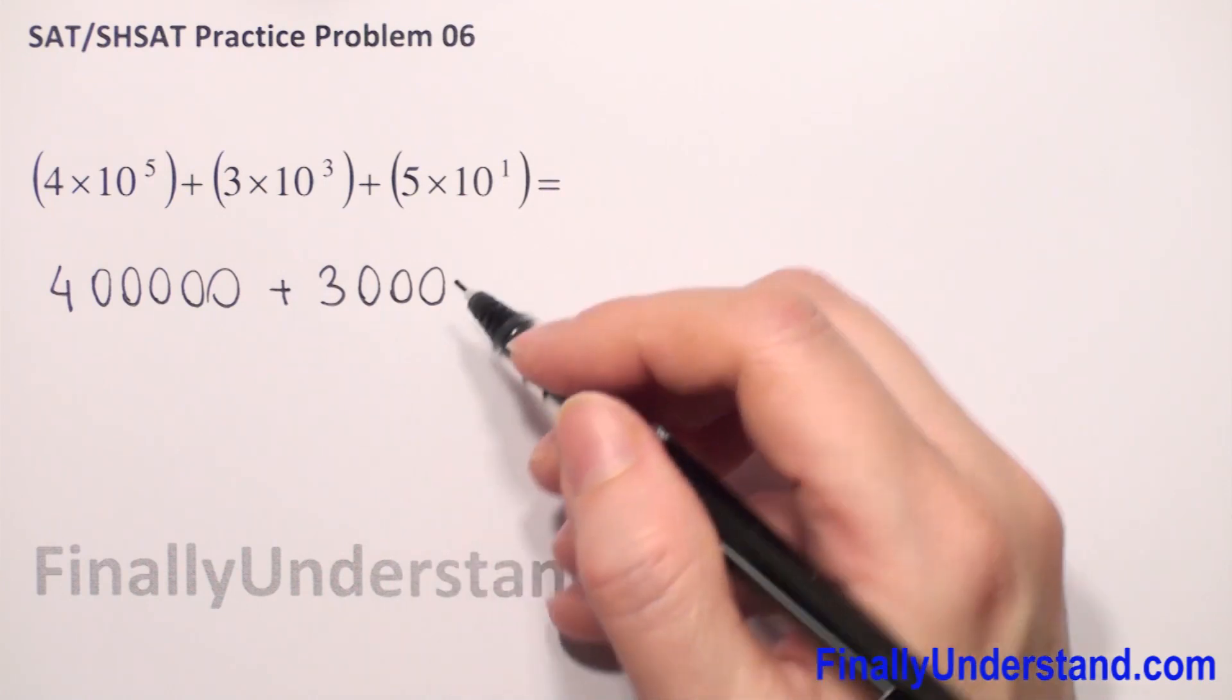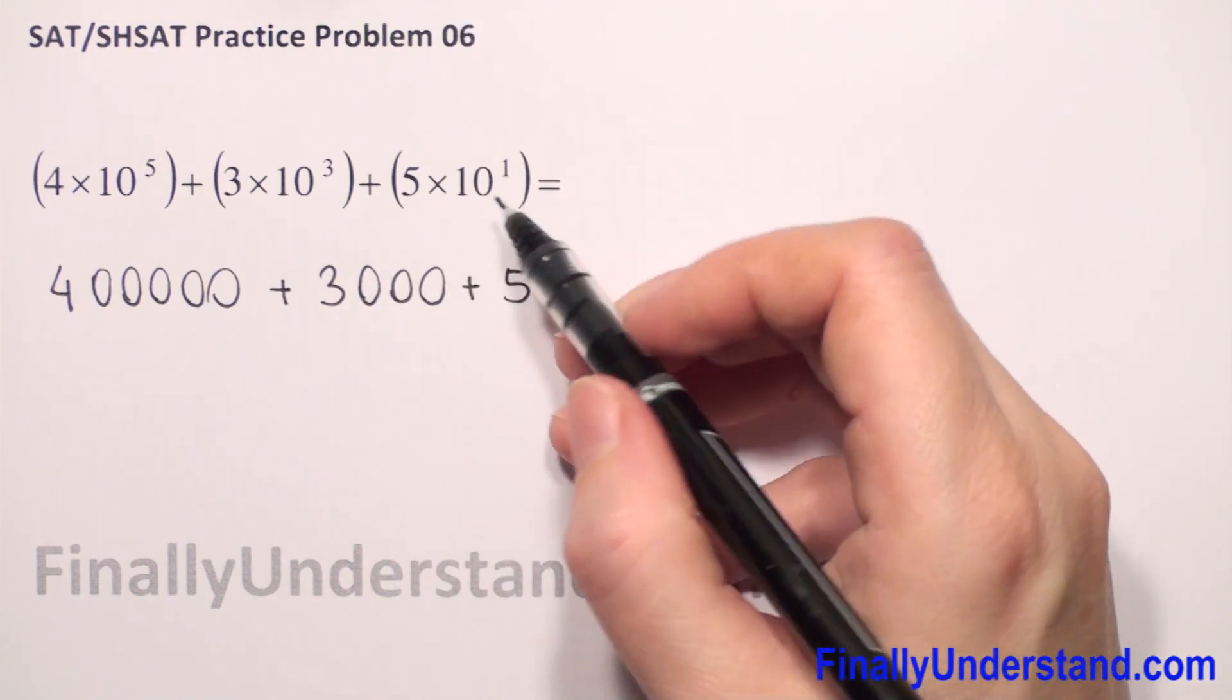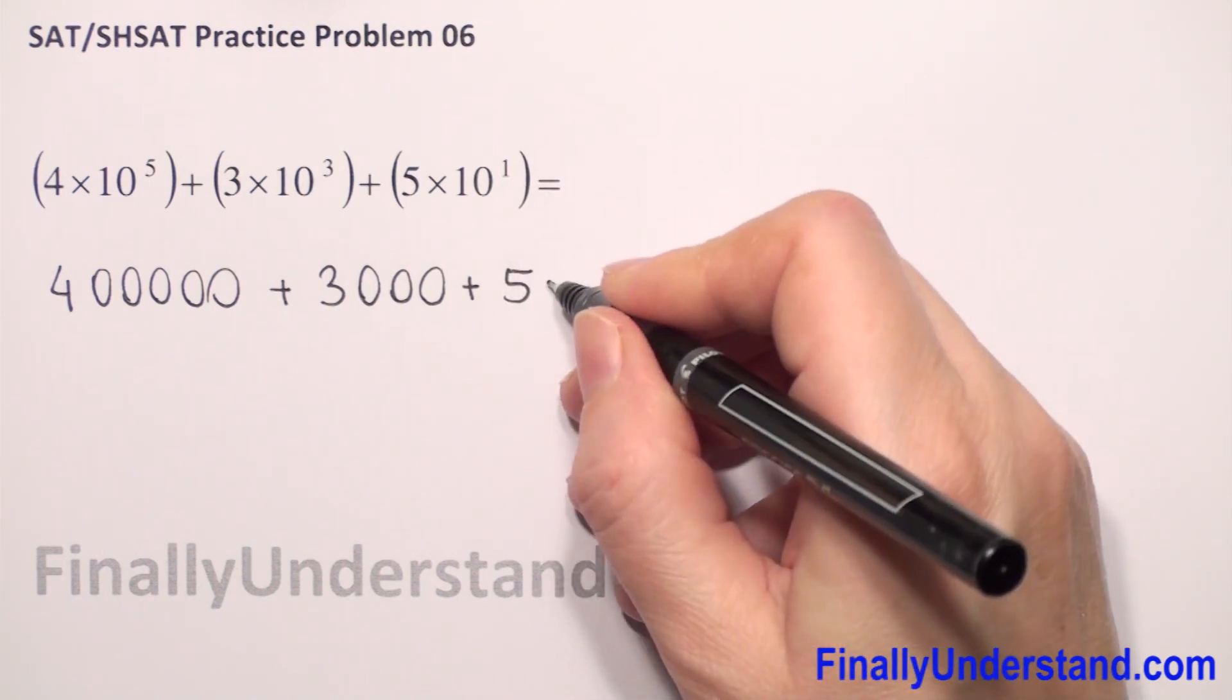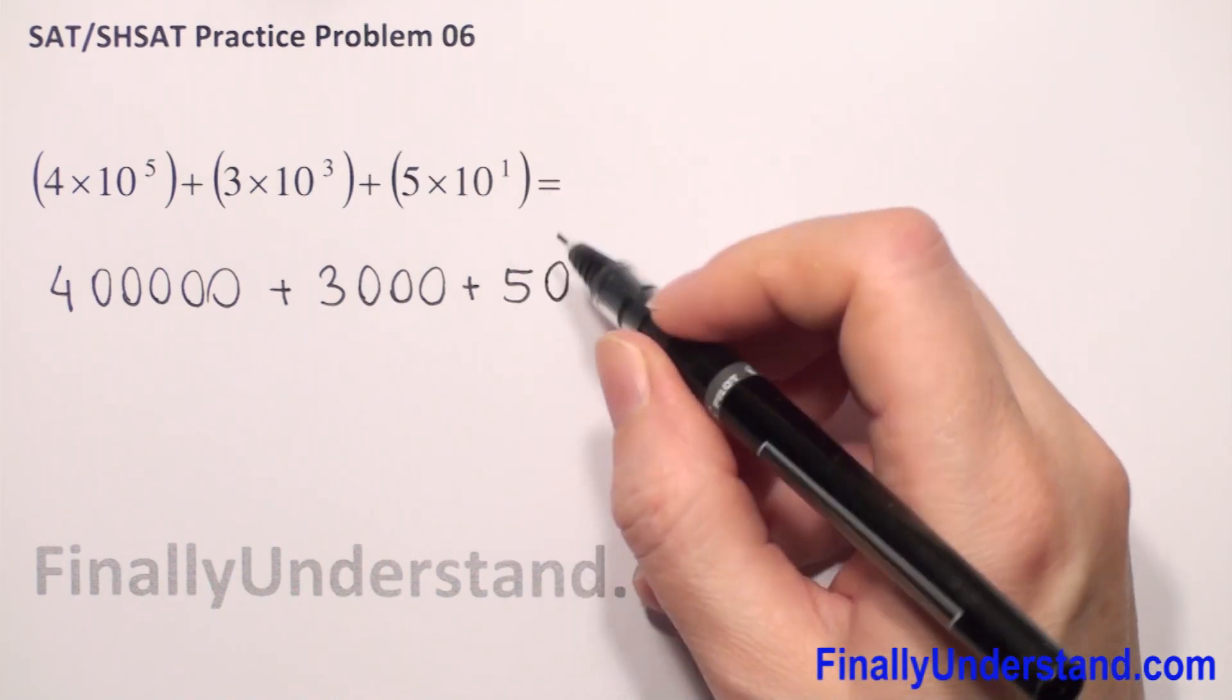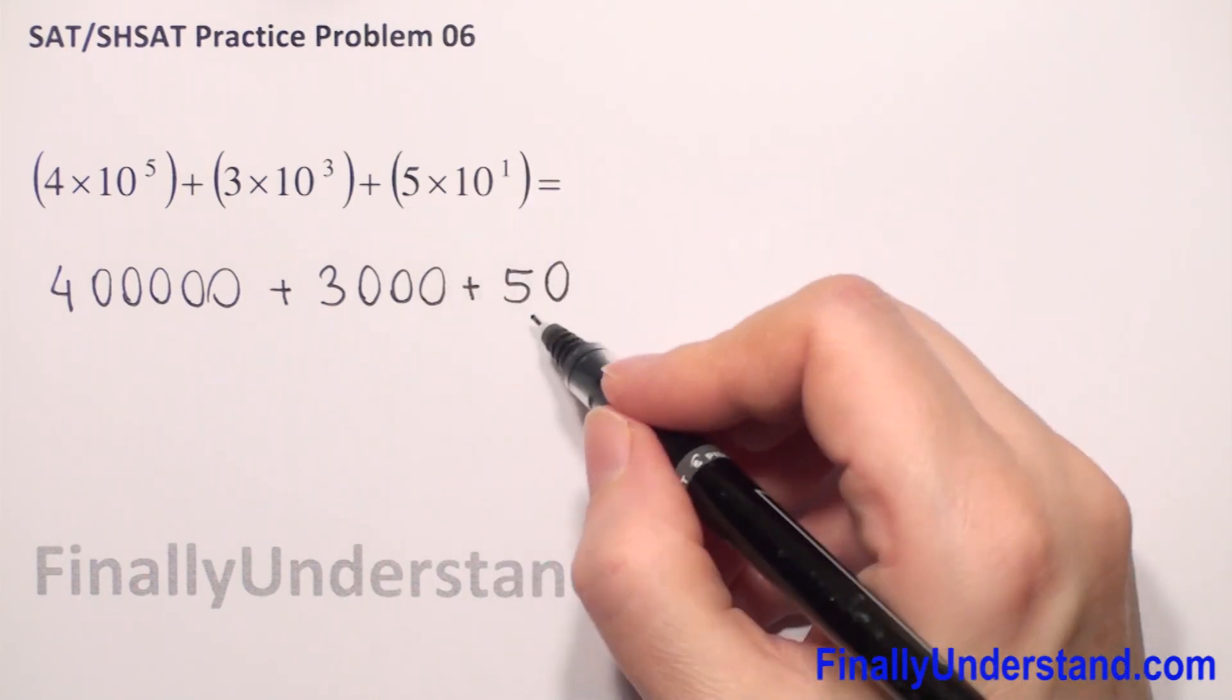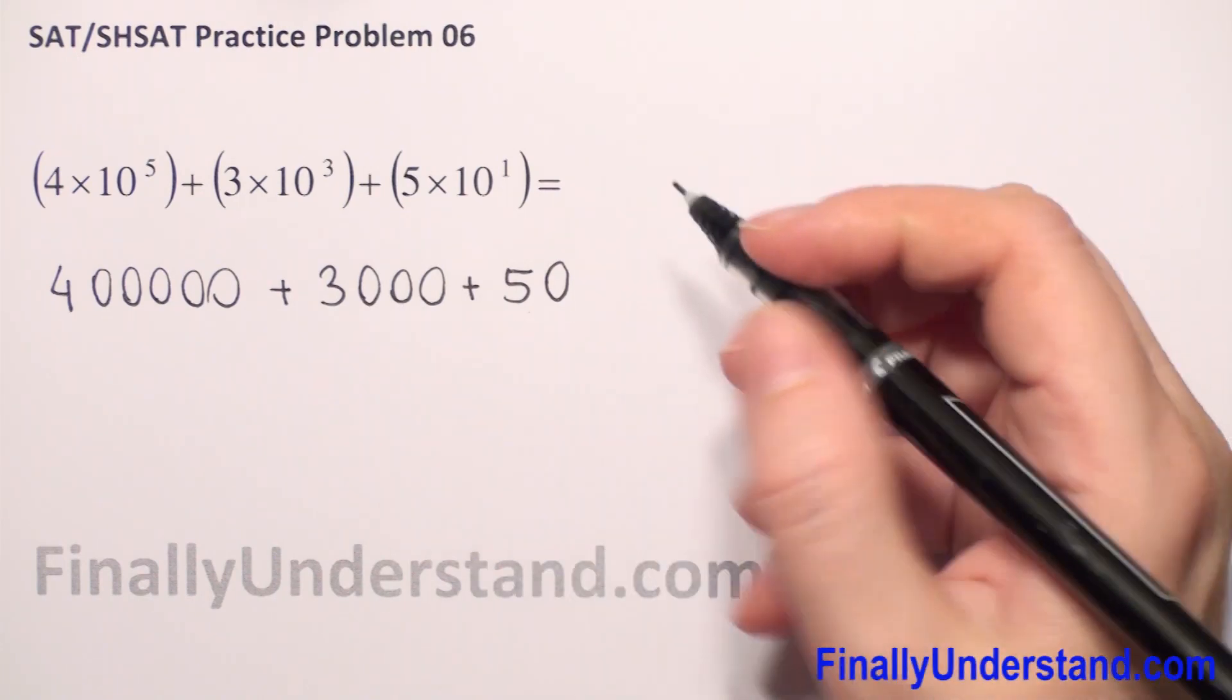3 times 10 to the 3rd power is 3,000. Plus we copy 5, and now we have 10 to the 1st power. Power is 1, so we have to write just 1 zero. We have 5 times 10 to the 1st power is 10. 5 times 10 is 50. And now we have to add these 3 numbers.